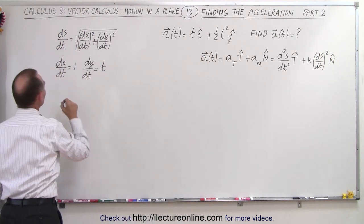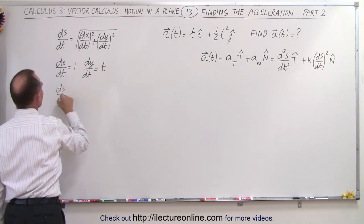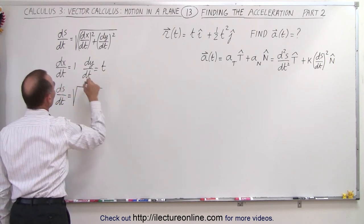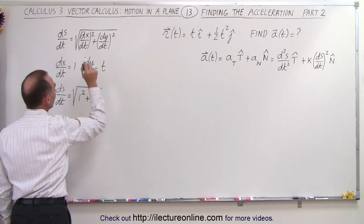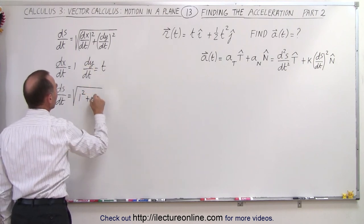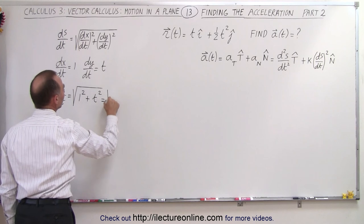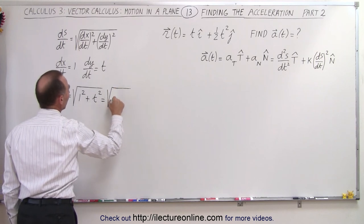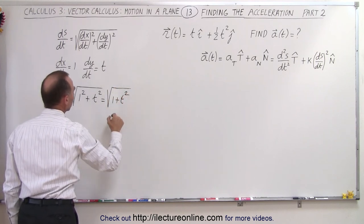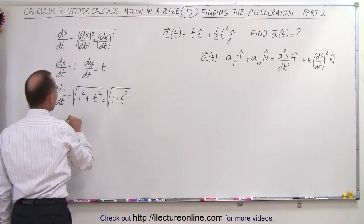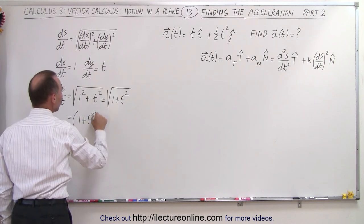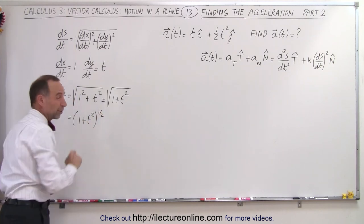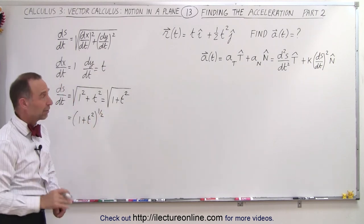That means ds/dt is therefore equal to the square root of dx/dt squared, which is 1 squared, plus dy/dt squared, which is t squared. That equals the square root of 1 plus t squared, or that can be written as (1 plus t squared) to the 1/2 power, since we're going to have to take the derivative again.